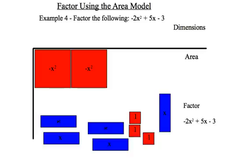Example 4 and my last example: I wish to factor -2x² + 5x - 3. So again, this represents an area. And I wish to find the dimensions. So I'll start with my two negative x² terms here.